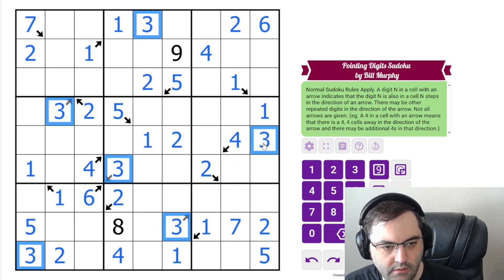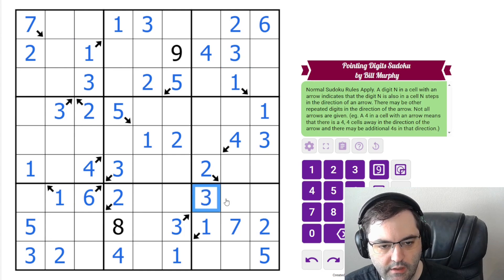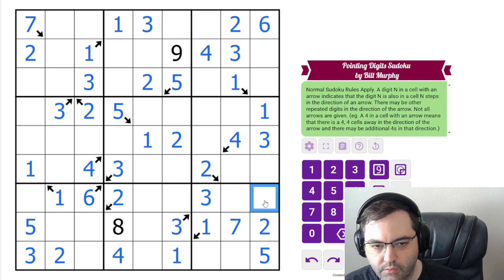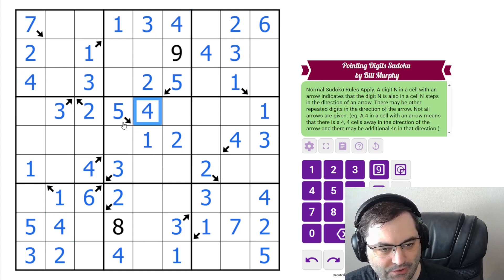Twos are done and ones were done. Three. Three must go here in this box because of the one in the way. That's going to place three here and here. Don't have as many fours, but we do need a four there. And this four means four here, and that means four here. That means four here. So these are all resolved.